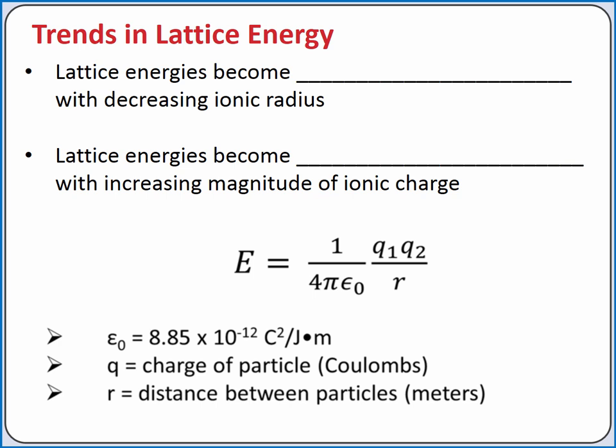We can also consider our trends in lattice energy. Lattice energies become more exothermic with decreasing ionic radius, because smaller ions are brought closer together, thus releasing more energy when these oppositely charged ions come together. Lattice energies also become more exothermic with increasing magnitude of ionic charge. So a 2+ ion combining with a 1− ion gives off more energy than a 1+ ion combining with a 1− ion.